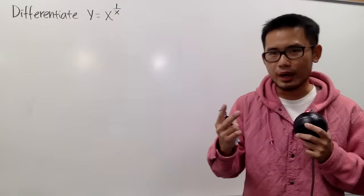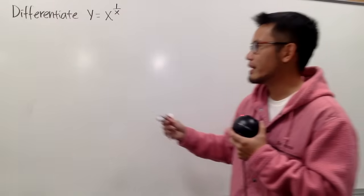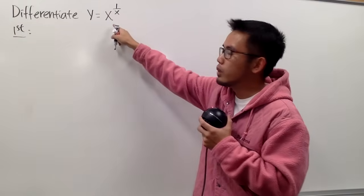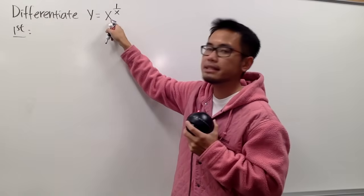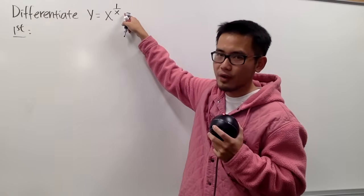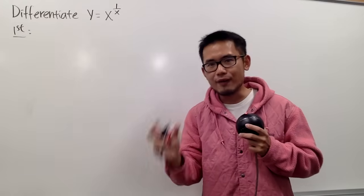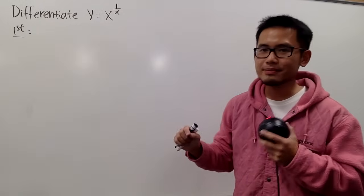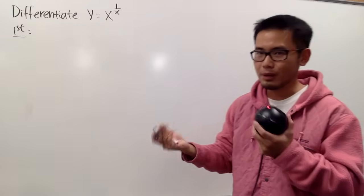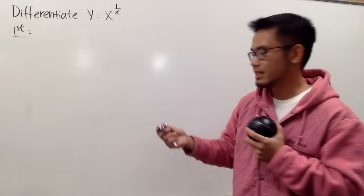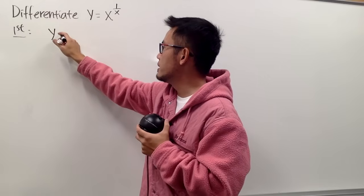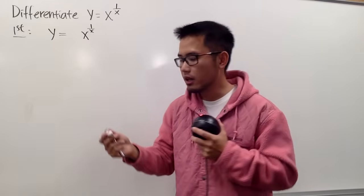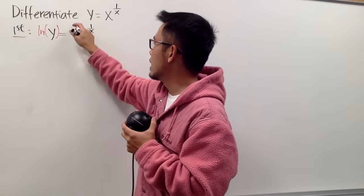I will present two ways so you can show your work. As we can see, we have y equals x — a function for the base — and 1 over x is also a function for the power. When we have a function to a function power, we can take the natural log on both sides and bring the power to the front by one of the log properties. So let's get to work. Let me write down the original equation: y equals x to the 1 over x. I will take the natural log on both sides.